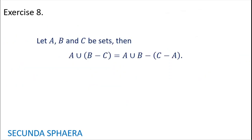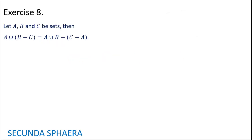Moving to exercise number 8 — a very interesting exercise. Let A, B, and C be sets. Then A union (B without C) is equal to (A union B) without (C without A). This is again an equality of sets, and it is going to be proven by equivalences. So: S in A union (B without C).